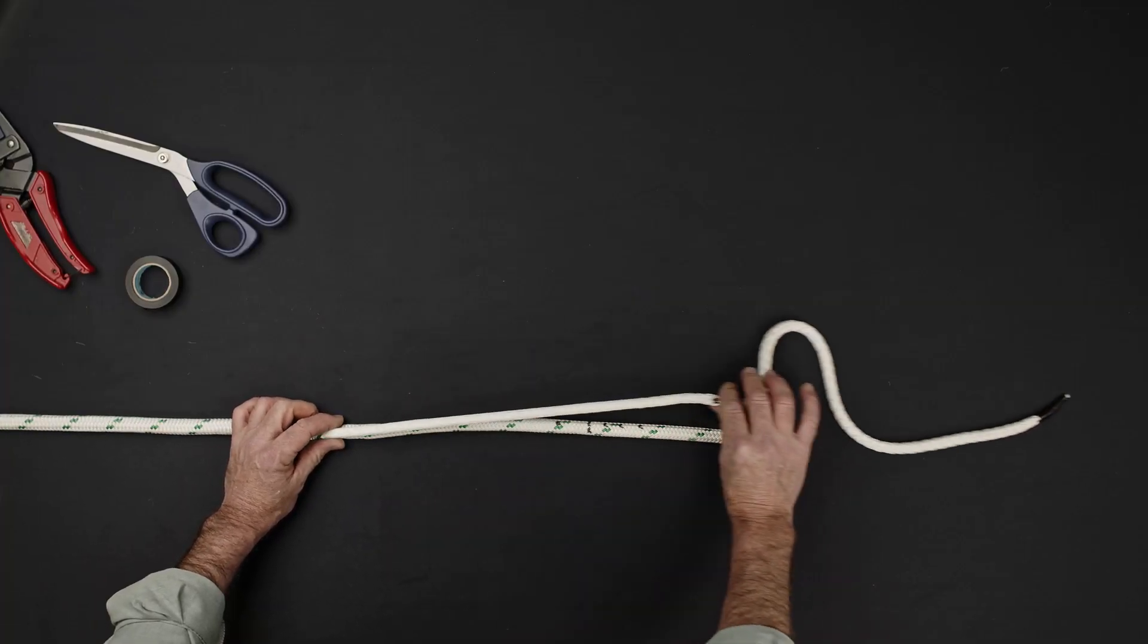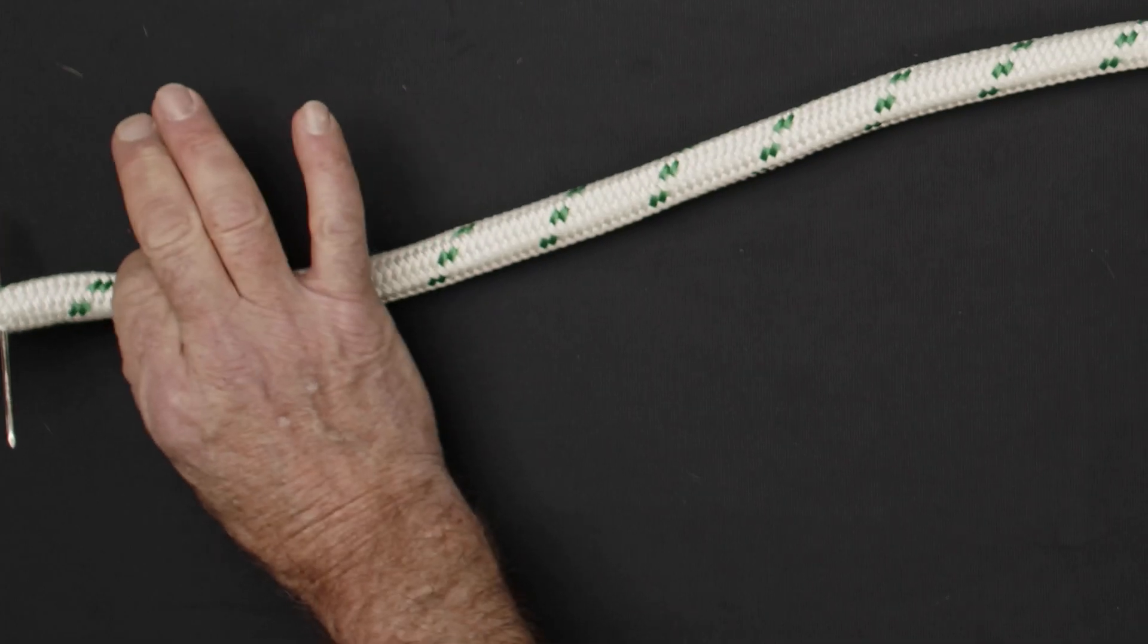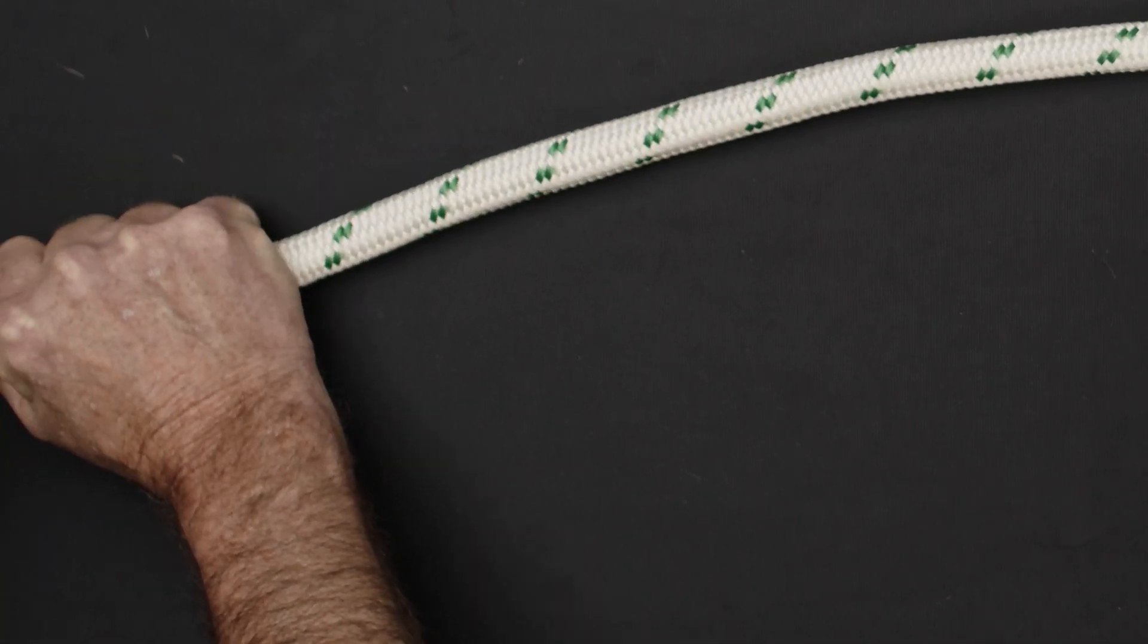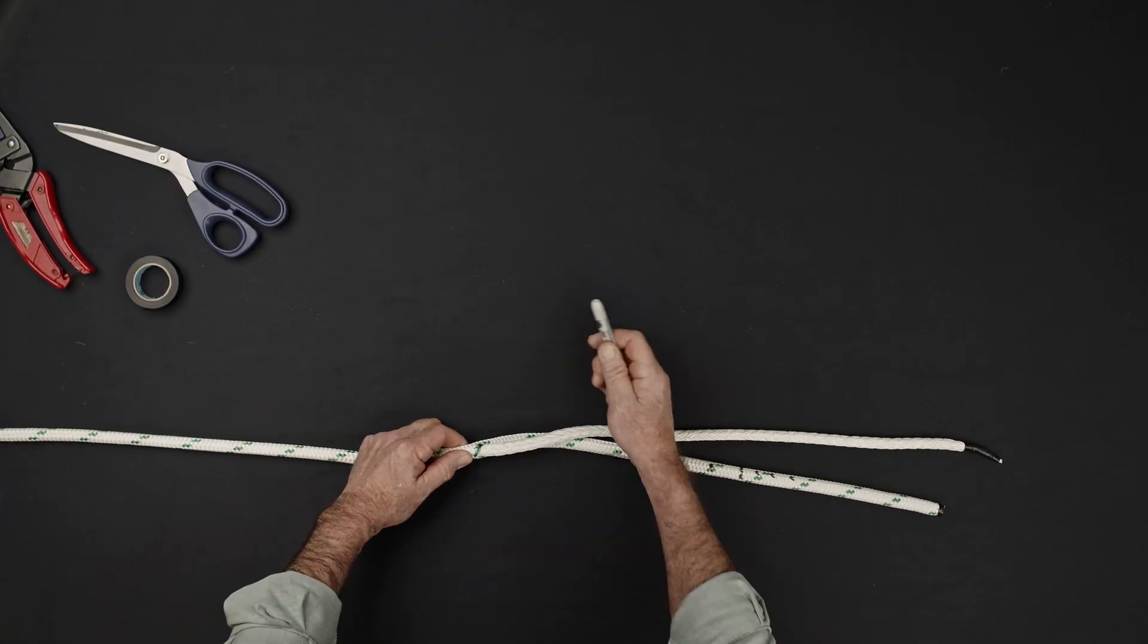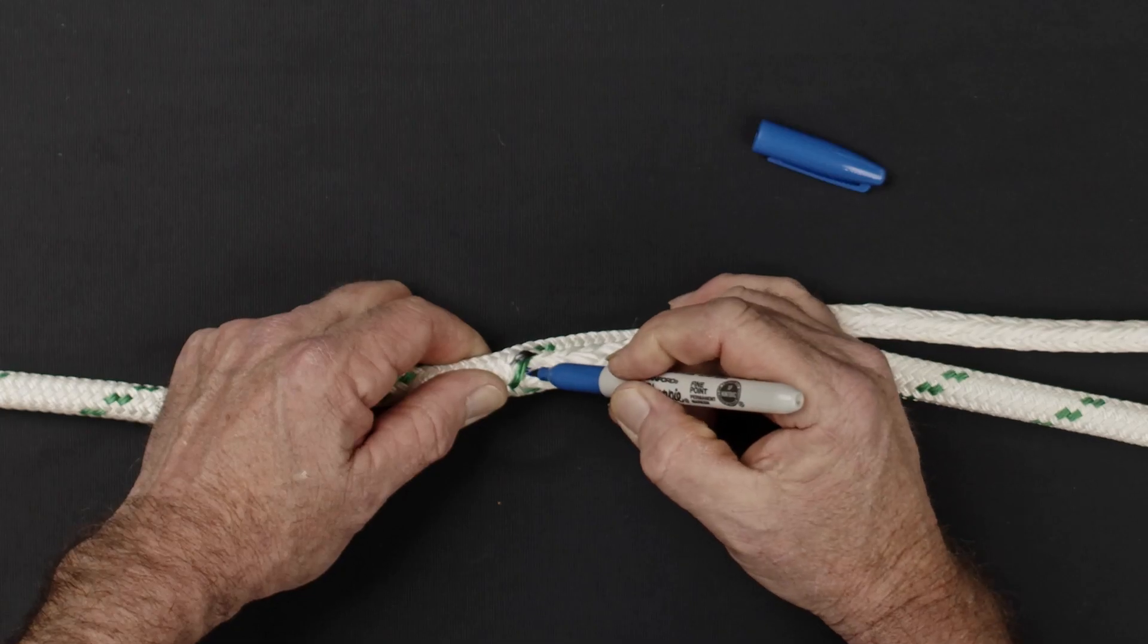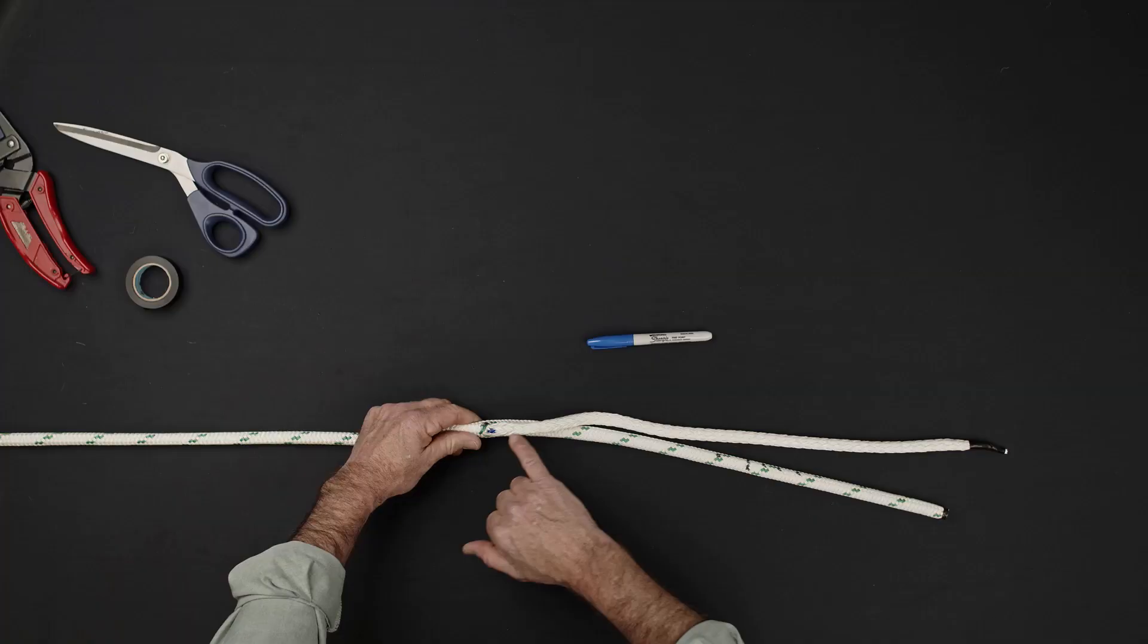Ensure that the core and sleeve are well balanced by extracting a short length of the core and working from the knot or needle, milk the sleeve slack back towards the end of the rope. Make a new mark at the point where the core now exits the sleeve.